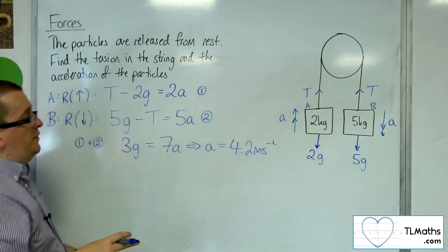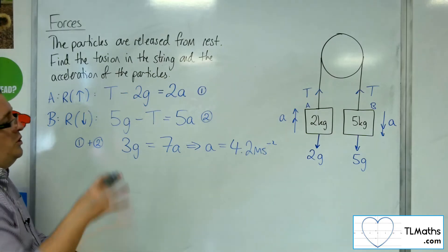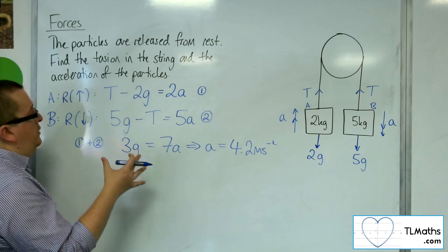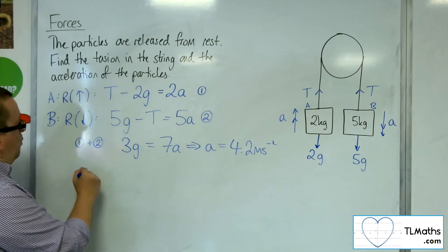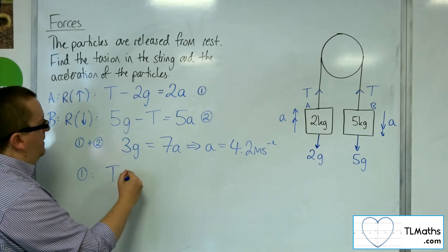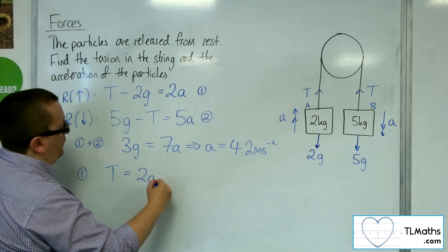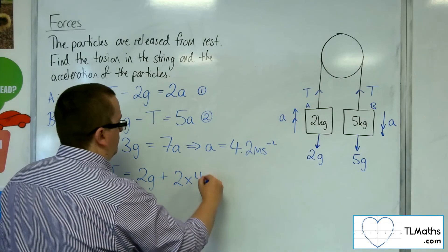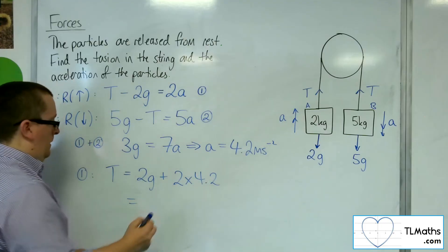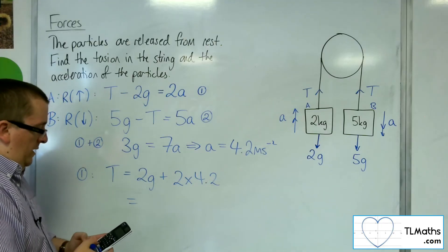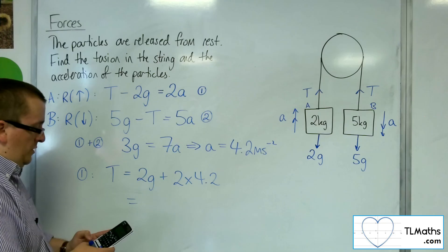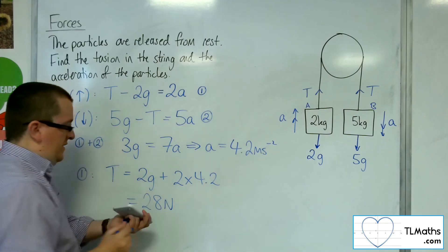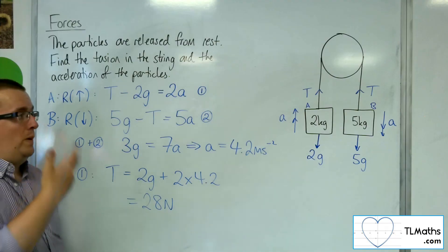Now as for the tension in the string, I can now substitute that back into one of the two previous equations to get the tension. So if I substitute into number 1, I've got T, which is going to be 2 lots of g plus 2 lots of a. So 2 lots of 9.8 plus 2 lots of 4.2 gets me 28. So the tension in the string is 28 newtons.